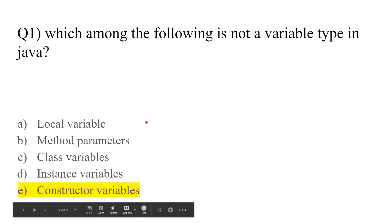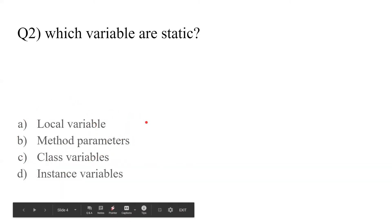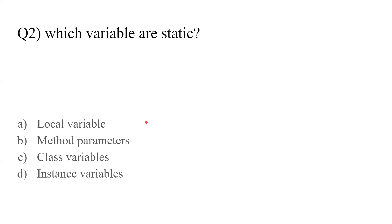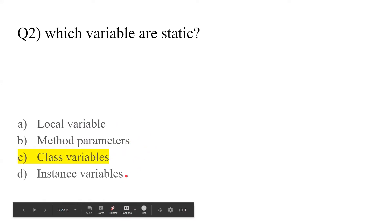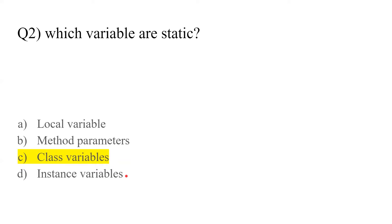Question number two: which variables are static? We have four options: local variables, method parameters, class variables, and instance variables. The answer is option C — class variables are supposed to be static always, because whenever we create an object of a class, they share the same set of static variables throughout the class.